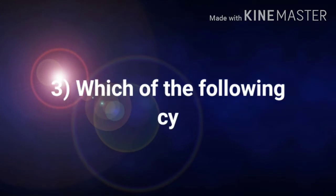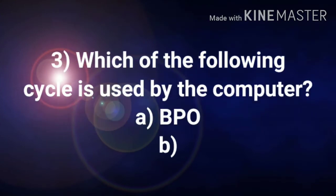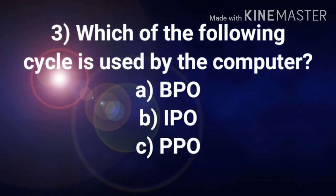Number 3: Which of the following cycle is used by the computer? BPO, IPO, and PPO. The right answer is IPO. The right answer is IPO: input, process, output.